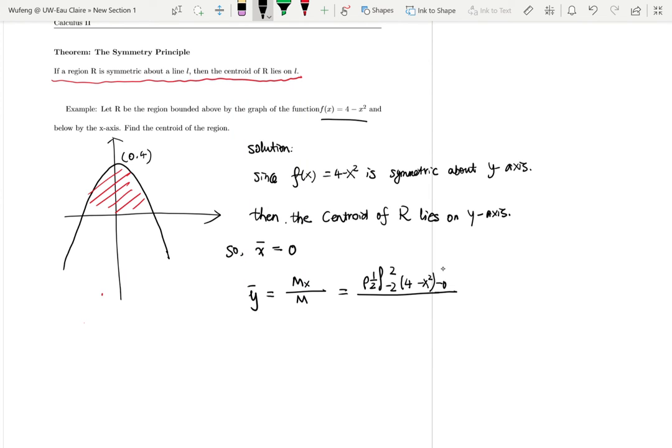So half of 4 minus x squared, then minus 0 squared, then dx over rho from negative 2 to positive 2, 4 minus x squared, dx.